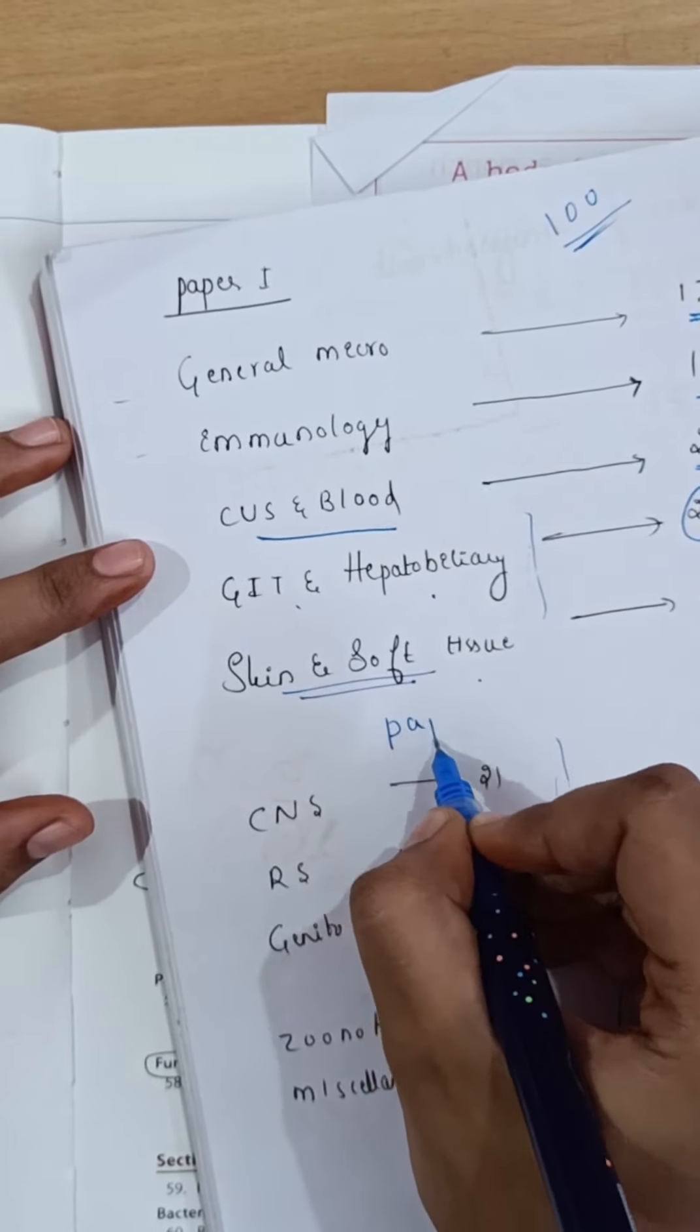Now let me tell you about the examination pattern. You will have two papers, Paper 1 and Paper 2, each carrying 100 marks. You will have MCQs for 10 marks in each paper. General microbiology carries 13 marks, immunology 16 marks, CVS and bloodstream infection 21 marks, GI 10 marks, hepatobiliary system is very important with 29 marks, and skin and soft tissue infections are 21 marks.